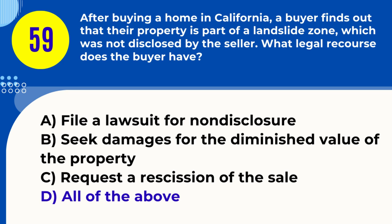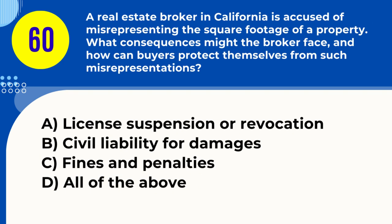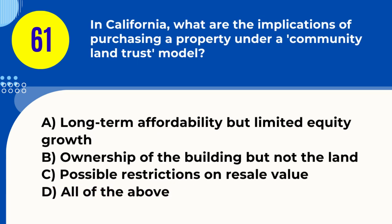Question 60. A real estate broker in California is accused of misrepresenting the square footage of a property. What consequences might the broker face and how can buyers protect themselves? A. License suspension or revocation B. Civil liability for damages C. Fines and penalties D. All of the above. Answer: D. All of the above. Explanation: Misrepresenting square footage can lead to license issues, liability for damages, and fines.